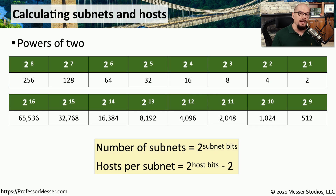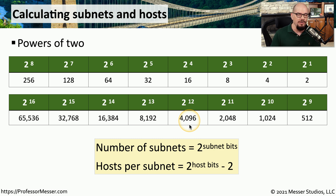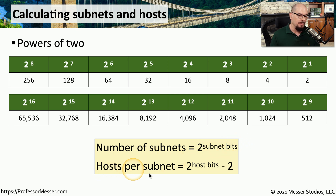One of the things we learned in our video on binary math was the powers of 2. For example, 2 to the first power is 2, 2 to the fifth power is 32, and 2 to the 12th power is 4,096. We can use these powers of 2 to help calculate the number of subnets and the number of hosts available depending on how many bits we have. The number of subnets is calculated as 2 to the subnet-bits power, and the number of hosts per subnet is 2 to the host-bits power minus 2.